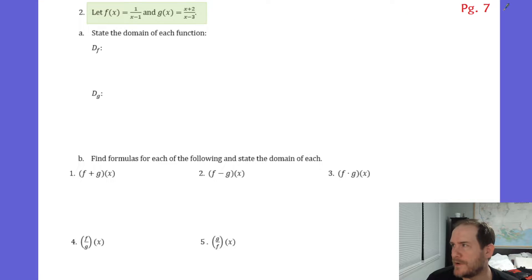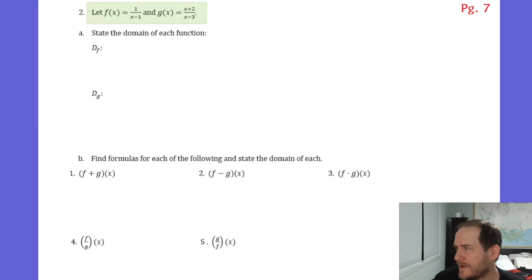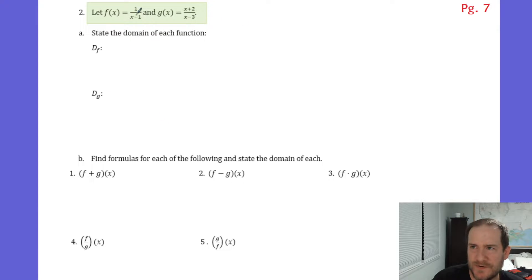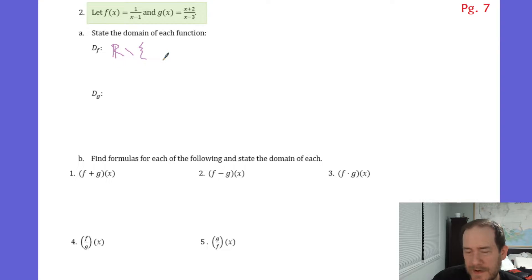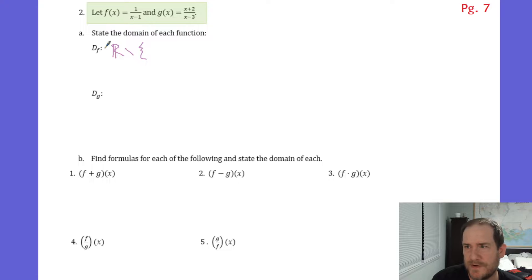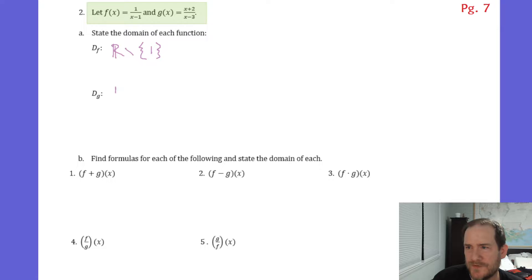Now we go to number 2 on page 7. It says state the domains. Both of these functions are rational functions, and rational functions are always going to have domains of all real numbers except for any values that make the denominator 0 — you can't divide by 0. So for function f, it's all reals except for positive 1. And for function g, it's all reals except for positive 3.